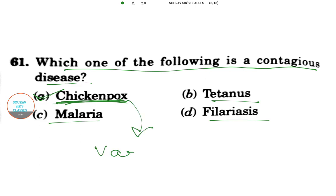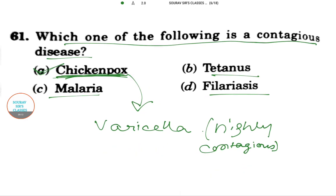Chickenpox has another name: varicella. It is highly contagious, caused by initial infection with a virus called VZV, or its full name, varicella-zoster virus. This virus causes chickenpox, which is why we also call it varicella.